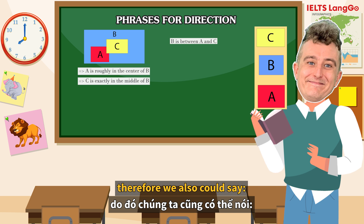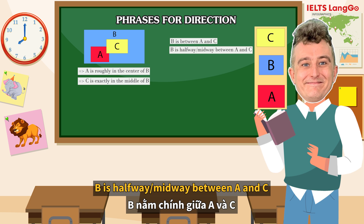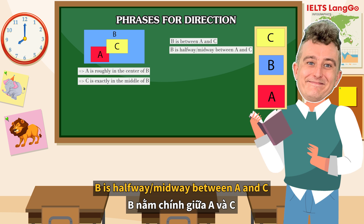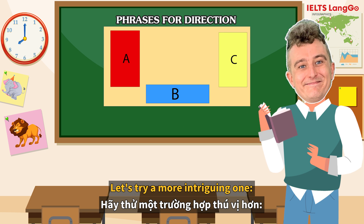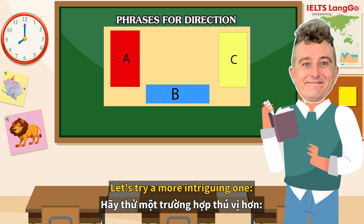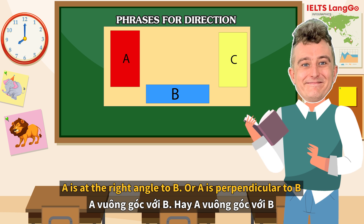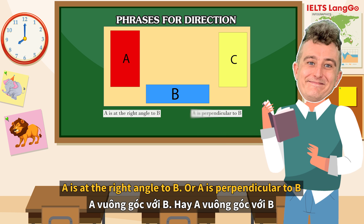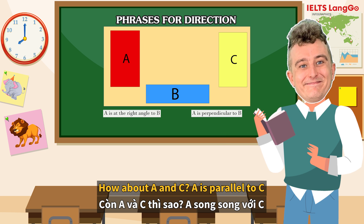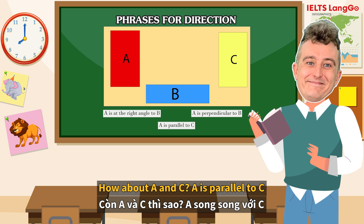Therefore, we could also say B is halfway, or midway, between A and C. Let's try a more intriguing one — we could use some mathematical terms here. A is at a right angle to B, or A is perpendicular to B. What about A and C? A is parallel to C.